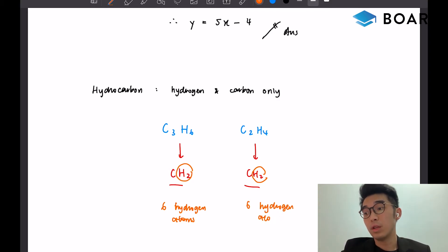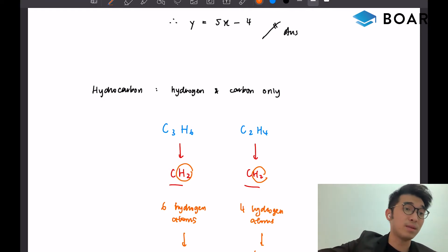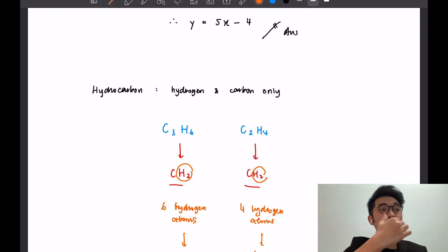But according to the ratio, it should bring it down to the same thing. It should be one to two, this one will still be one to two. So technically they will carry the same percentage by mass of hydrogen. So that would be the answer: empirical formula.